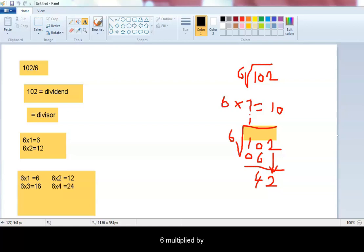6 multiplied by 5 equals 30. 6 multiplied by 6 equals 36.